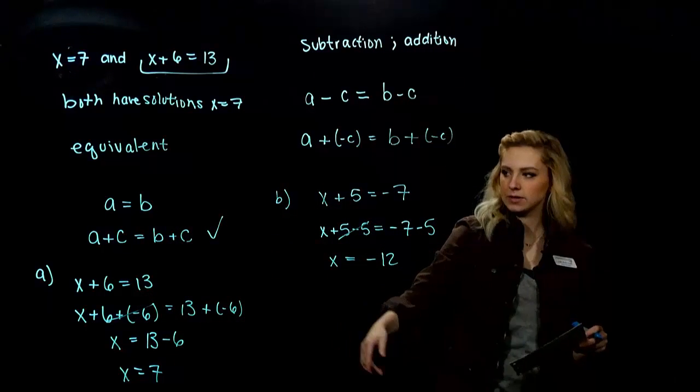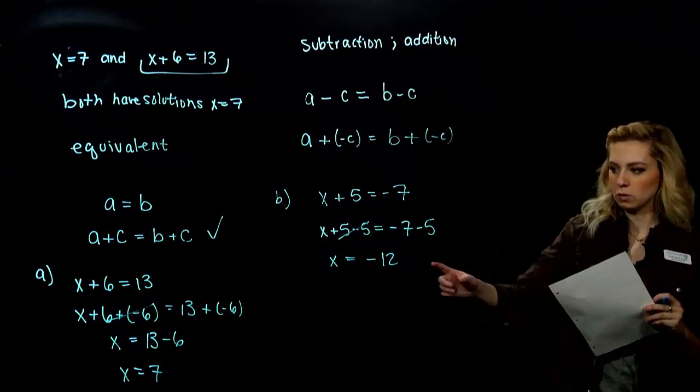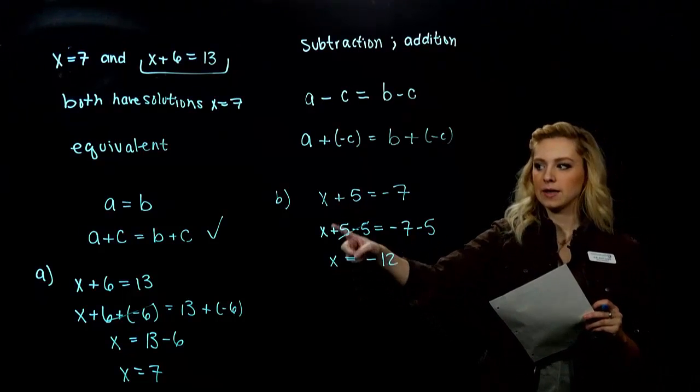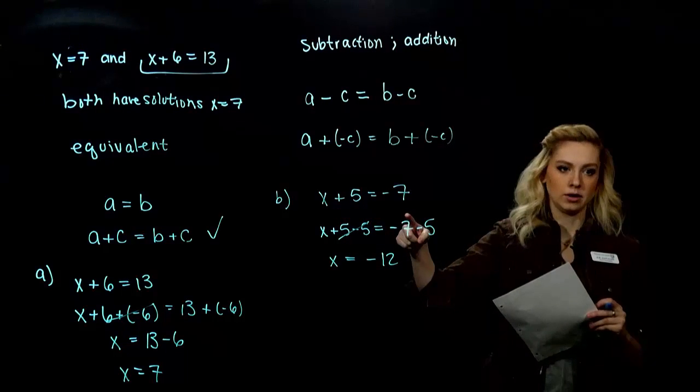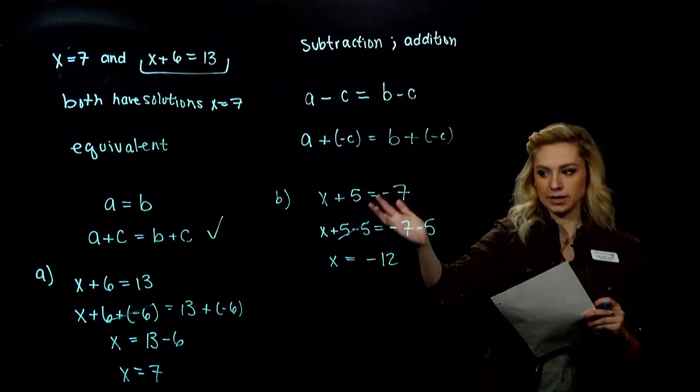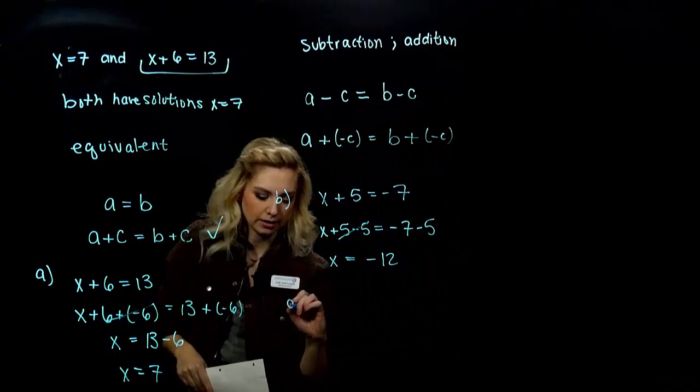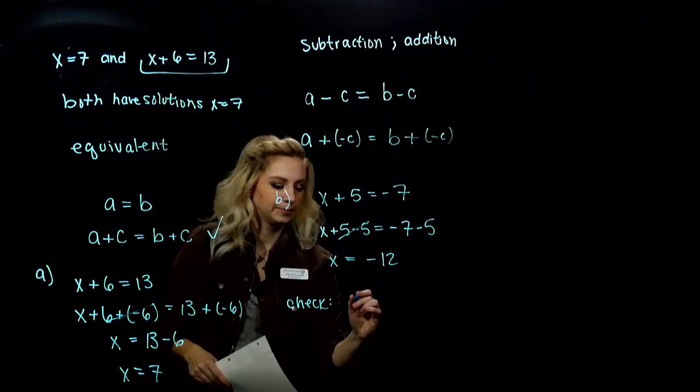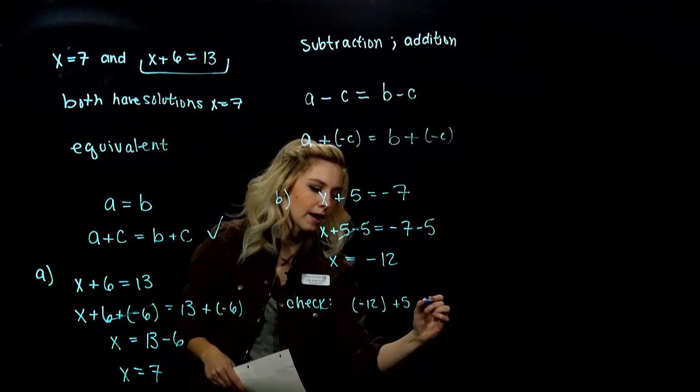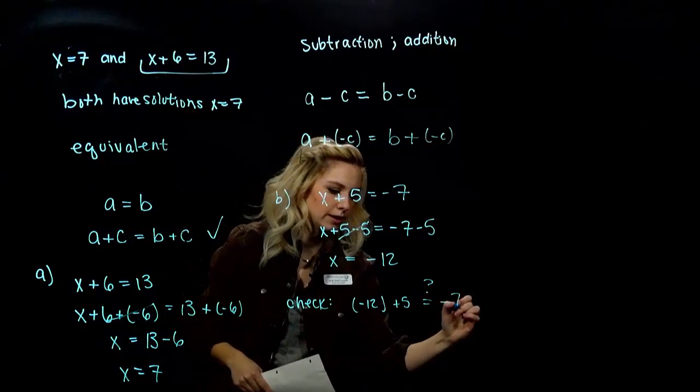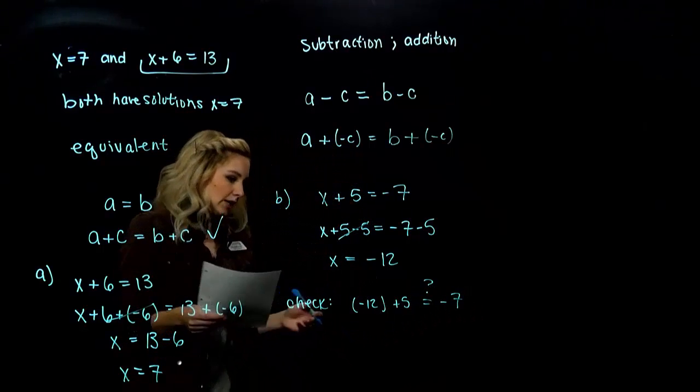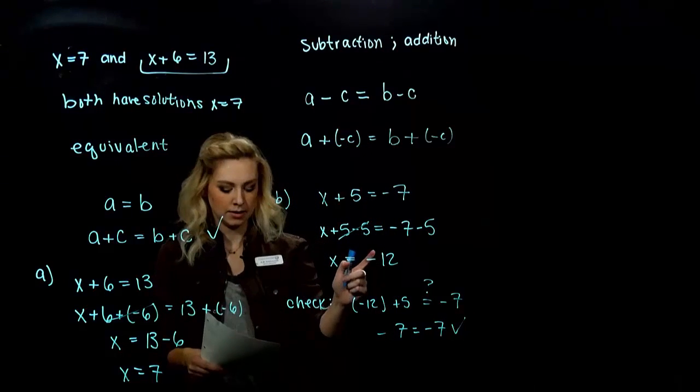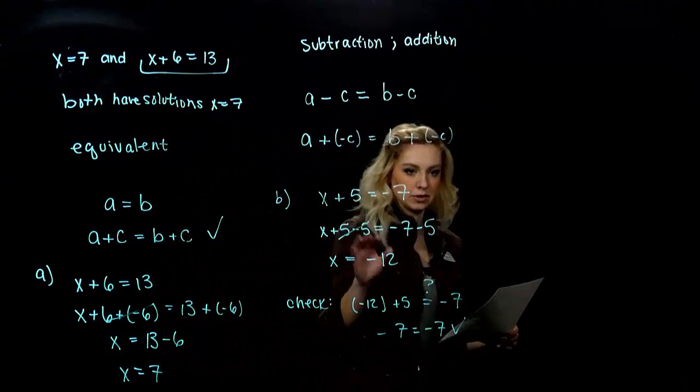So, whenever we solve equations, we want to make sure that we didn't make any mistakes with this algebra. So, I always want to check and make sure, when I plug that back into the equation, the original one, does it hold true? Did I solve it correctly? So, we always want to do a check. So, when I plug in negative 12 for x and I add 5, is that really equal to negative 7? And, it is because what do we get over here? Negative 7 is equal to negative 7. So, yes, negative 12 is a solution. We solved it correctly.